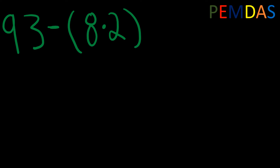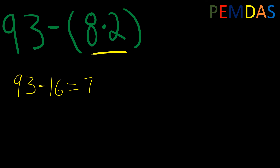Here we have 93 minus (8 times 2). Using the PEMDAS method, P is for parentheses — we first start with our parentheses, so 8 times 2. That's what we're going to compute first: 8 times 2 is 16. So we have 93 minus 16. There are no exponents, no multiplication, no division, no addition — but there is subtraction. So 93 minus 16 would be 77.